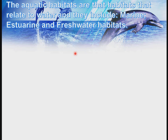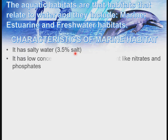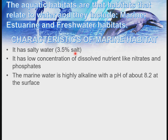Let's look at the marine habitat. The marine habitat is one of the types of aquatic habitat that occupies almost 70% of the earth's surface. The marine habitat has salty water — about 3.5% salt — and has a low concentration of dissolved nutrients like nitrate and phosphate. The marine water is highly alkaline with a pH level of about 8.2 at the surface.